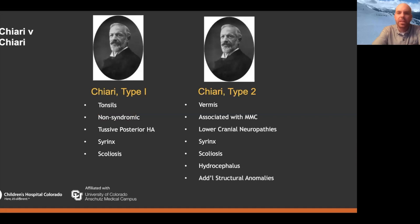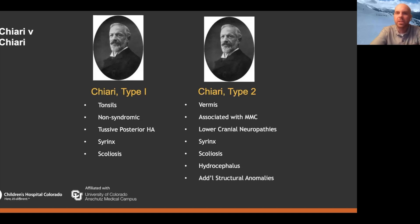As you probably heard last week, Chiari 1, which is going to be much more common, happens with herniation of the cerebellar tonsils, versus Chiari 2, which is herniation of the vermis — a more centrally located anatomical structure. Most patients who have Chiari 1 don't have a lot of other associated conditions, so it's not part of a greater syndrome in most cases. Whereas Chiari 2 is universally associated with myelomeningocele, and that comes with a host of other signs, symptoms, and neurological malformations.